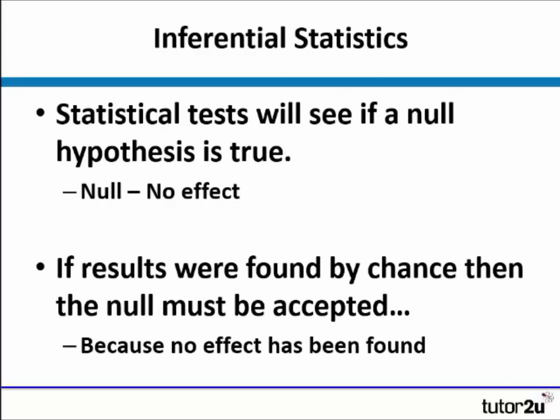Inferential statistics are used to see whether or not a null hypothesis is true. A null hypothesis would state there is no effect between our variables, or no relationship in a correlation. If the results were found by chance in our experiment or research, then we must accept the null hypothesis because we have not found an effect. It's an inferential statistic which will allow us to make this decision.